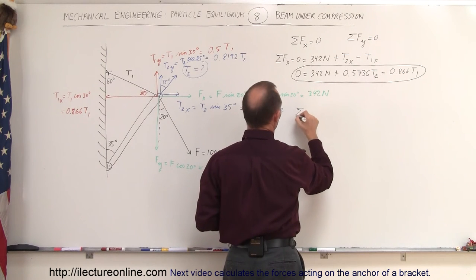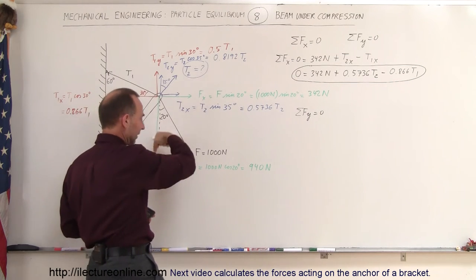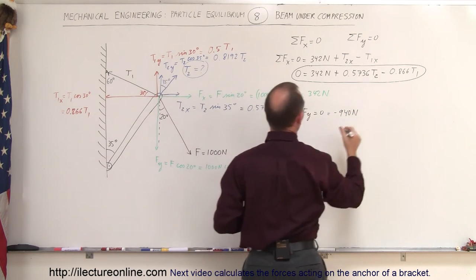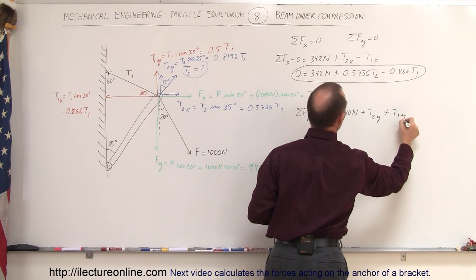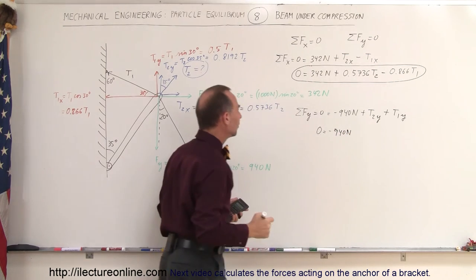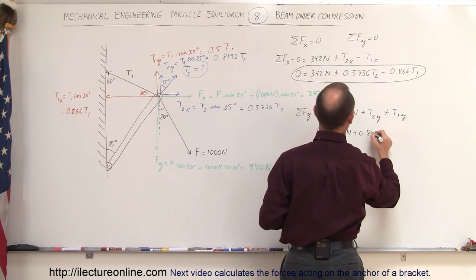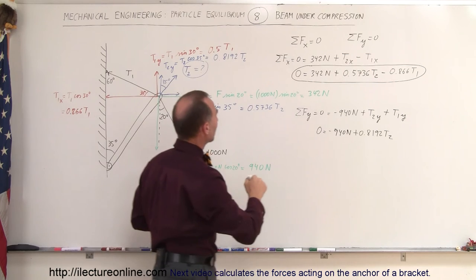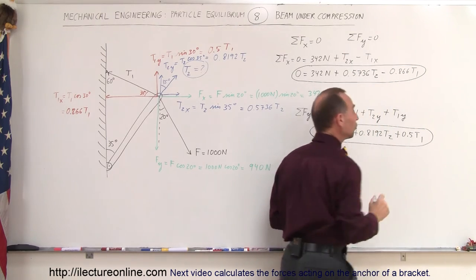The sum of forces in the y direction equals zero. We have minus 940 Newtons (acting in the negative direction), plus T2_y, plus T1_y. So: 0 = −940 + 0.8192·T2 + 0.5·T1. That's our second equation. Now we can solve these two equations simultaneously for T1 and T2.